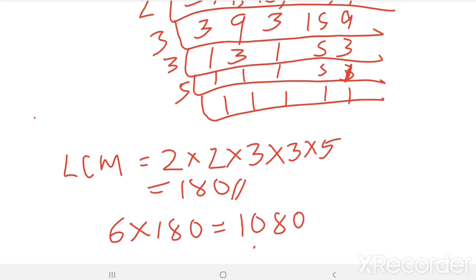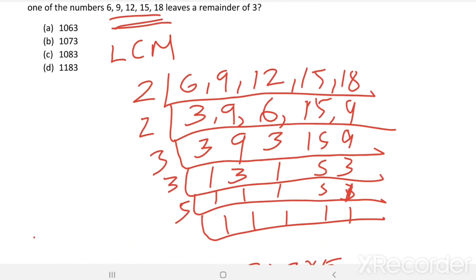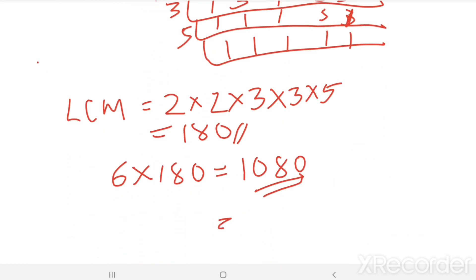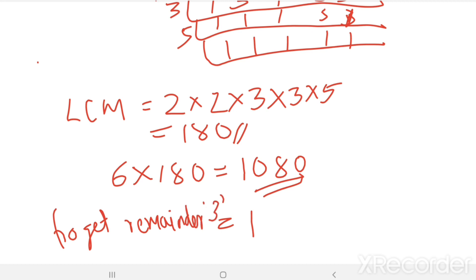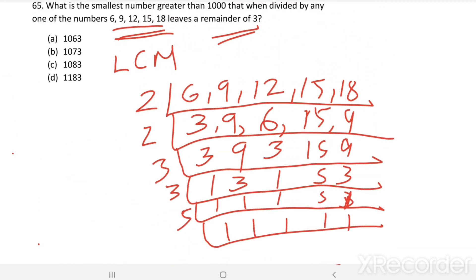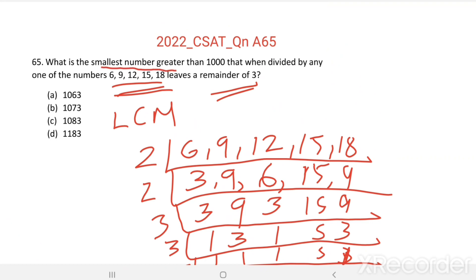The LCM comes out to 1080. So 1080 is exactly divisible by all these numbers. Since we want to find a number which gives remainder 3, we add 3 to this number. Now 1083 is the smallest number greater than 1000 which, when divided by any one of these numbers, leaves a remainder of 3. So option C is the right answer.